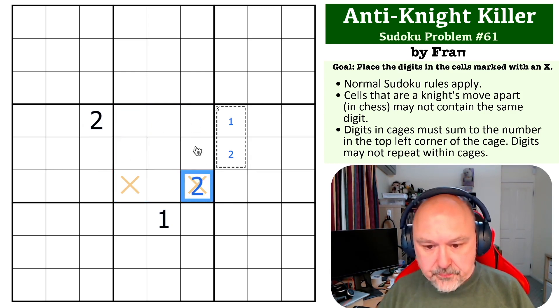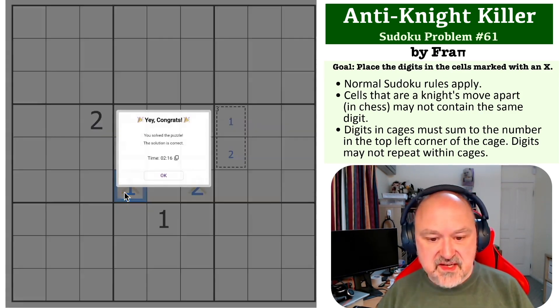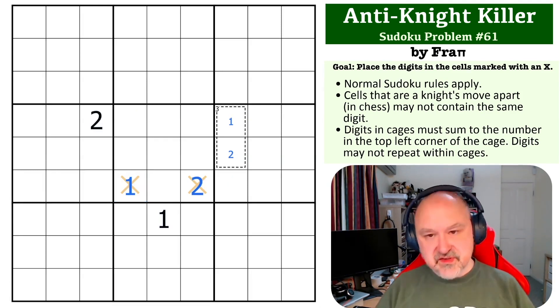Because those two see all of those, this must be a two. Once the two is placed, the ones are limited. This one sees those by Sudoku, that by knight's move, and that's by knight's move. That one sees both of those by knight's move, so that is a two. This has to be a one and you can place those digits fairly quickly.